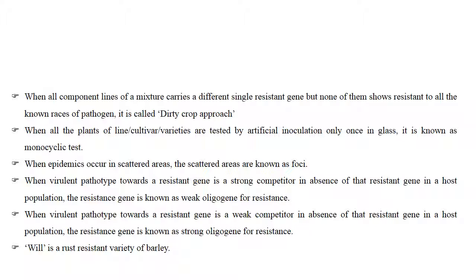When all plants or lines of a cultivar are tested by artificial inoculation only once in a glasshouse, it is known as a monocyclic test. When epidemics occur in scattered areas, it is known as foci. When a virulent pathotype towards a resistant gene is a strong competitor in the absence of that resistant gene in the host population, the resistant gene is known as a weak oligo gene for resistance. When the virulent pathogen towards a resistant gene is a weak competitor in the absence of that gene, it is a strong oligo gene for resistance. Will is a rust-resistant variety of barley.